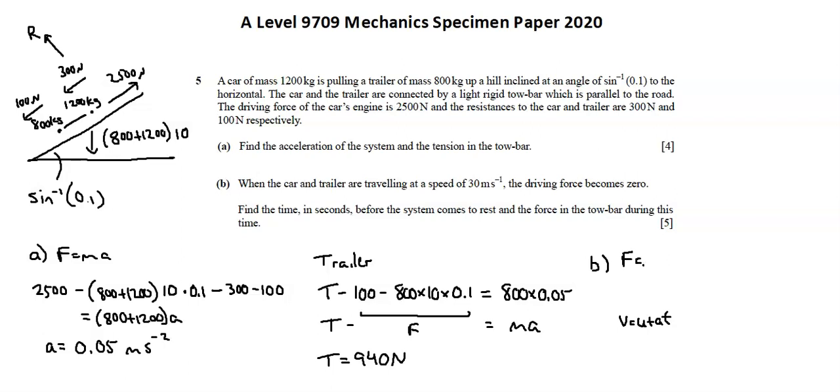Force equals mass times acceleration. There's no longer a driving force. We have the opposing force of gravity, 800 plus 1200 times gravity of 10 times the sine value of 0.1 minus the two resistances of 300 and 100 equals mass times acceleration, masses of 800 and 1200 times a. A simplifies to negative 1.2 meters per second squared.